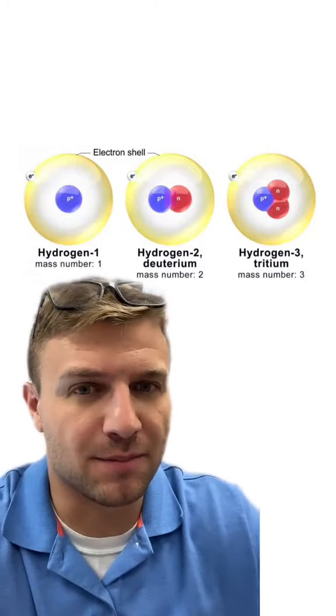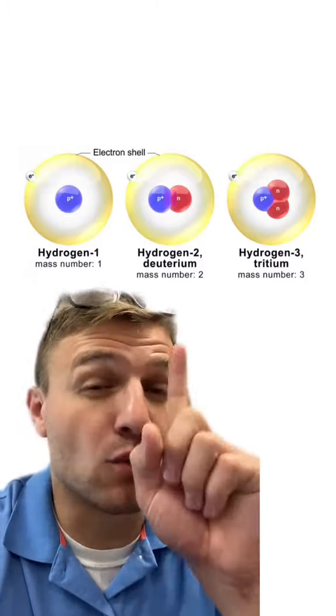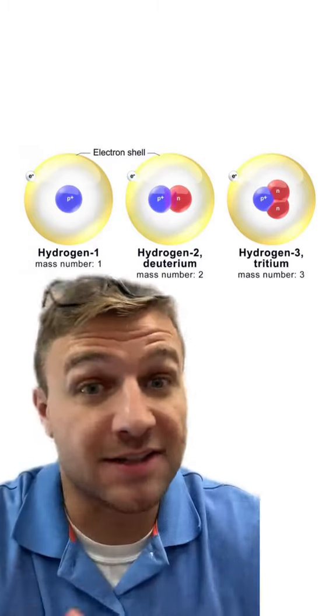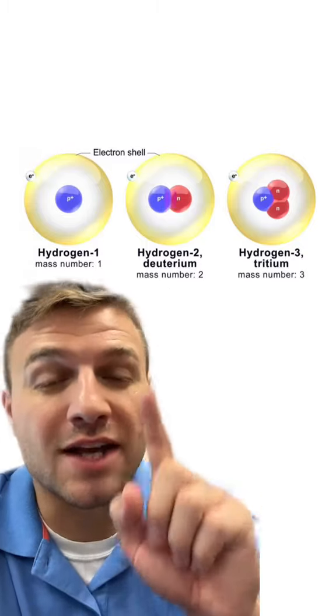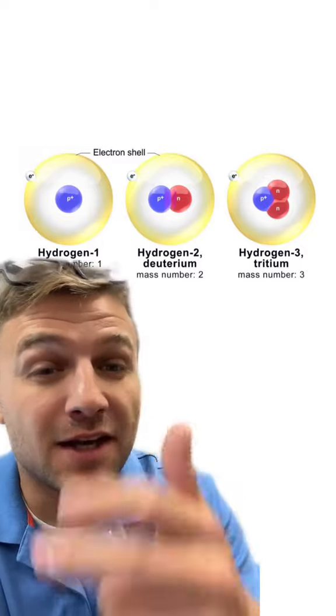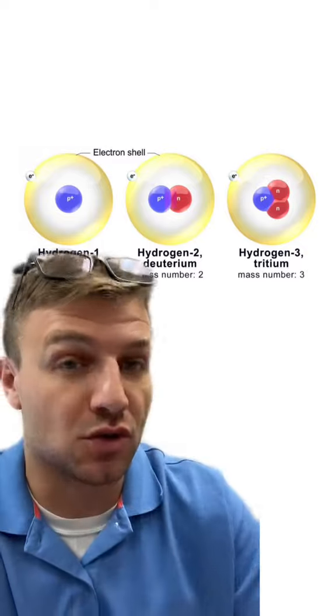Let's look at hydrogen for another example. All three of these isotopes have one proton in the nucleus. Hydrogen-1 has a mass number of one because it doesn't have any neutrons. Hydrogen-2 has a mass number of two because it has a proton and a neutron. Hydrogen-3 has a mass number of three because it has one proton and two neutrons.